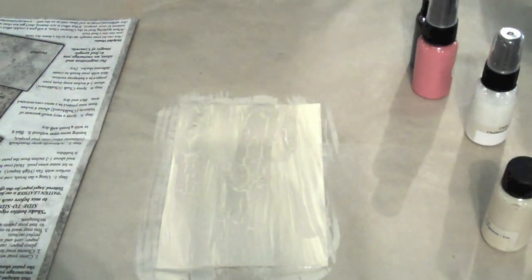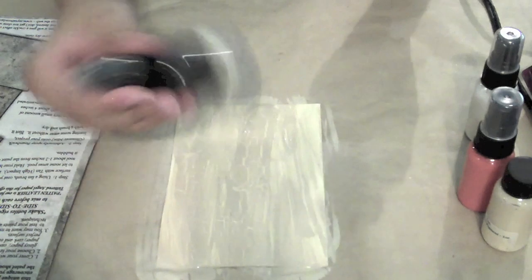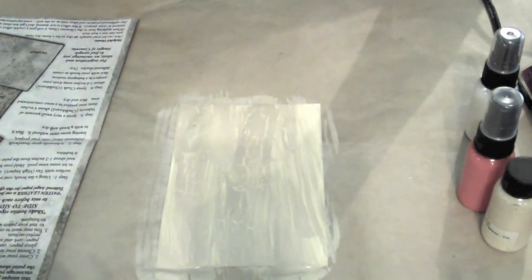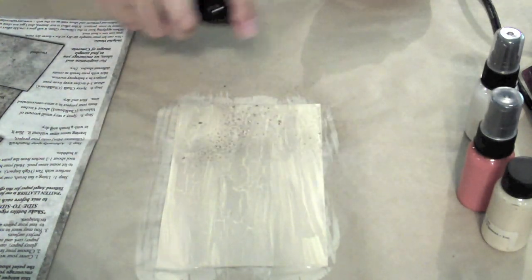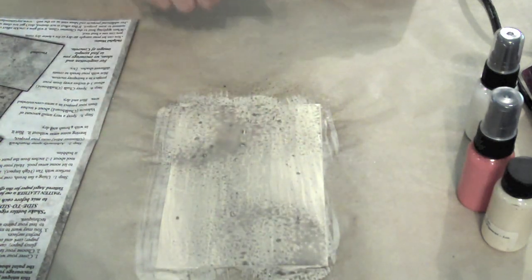All right, so it doesn't take too long. The next step is to take your Boardwalk Glimmer Mist. Give it a good little shake. You're going to spray all over this baby. And you're going to want to spray a little heavier in some areas and lighter in others.